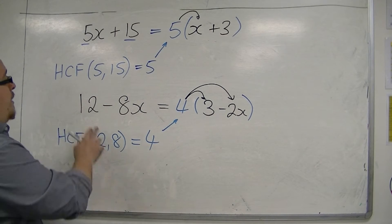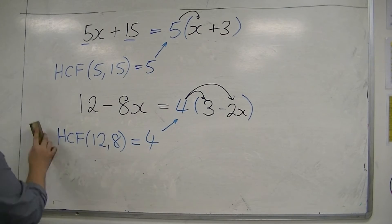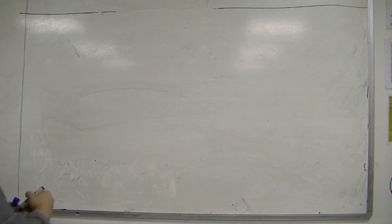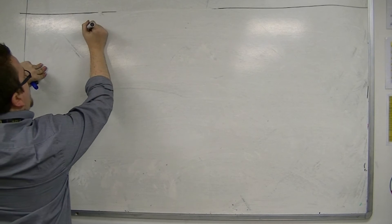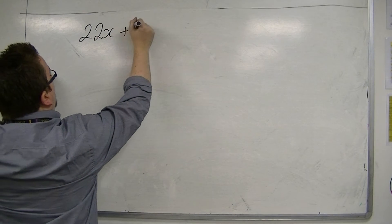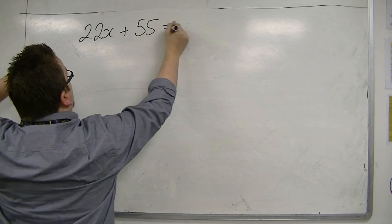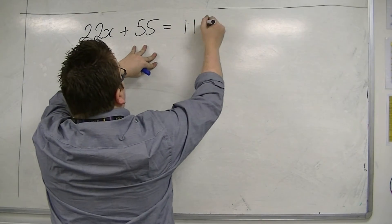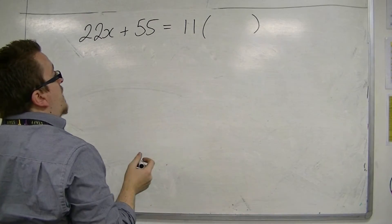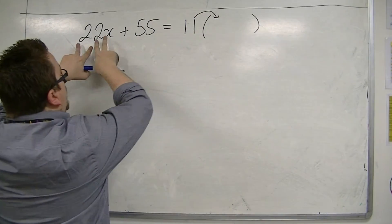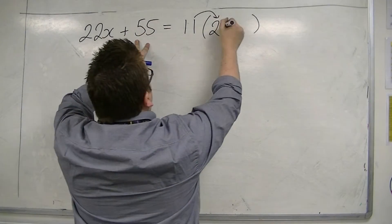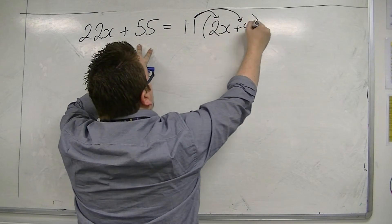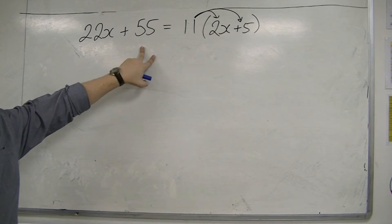So, let's do another example. Let's make this a little bit easier for ourselves. In the sense that if I had something like 22x plus 55, then the largest number that goes into both 22 and 55 is 11. So, that's what goes on the outside of the bracket. And 11 times 2x will make 22x. And 11 times 5 will make 55.